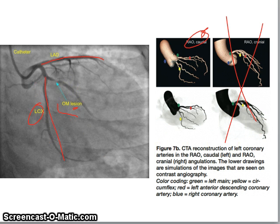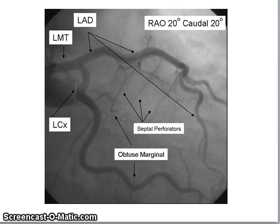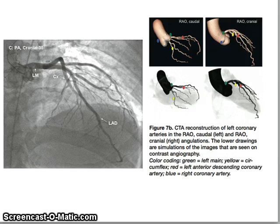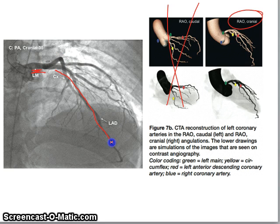Comparing that to the drawing is helpful. Here's another RAO caudal for practice. Now the RAO cranial: it is cranial, so it's best at viewing the LAD. Here we have the left main — things can get superimposed and overlapped — but the key structure is the LAD, the long one going all the way down to the apex. The circumflex is also visible but not well-visualized in this view.